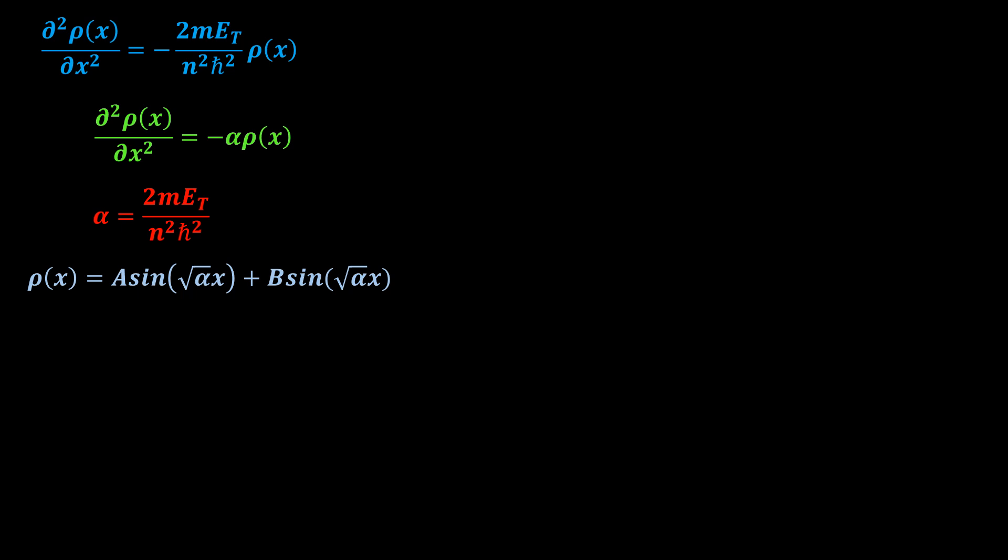Since the wave function is zero outside the box, it should also be zero at the boundaries. So rho of zero is equal to rho of a, which is equal to zero. If rho of zero is zero, then B is equal to zero, in which case rho of a is this, and is equal to zero. This equation is true only if the sine of this is equal to zero. So the general solution is square root of alpha a equal to n pi. The appearance of this n here is what introduces quantization of energy in quantum mechanics.